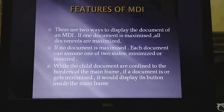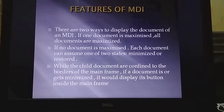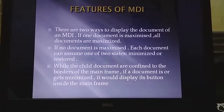The features of MDI: there are two different ways in which we can display the document in MDI. If one document is maximized, then the other document is also maximized. If no document is maximized, then the other document can assume either a minimized state or restored state. The child documents are confined to the borders of the main frame, meaning we cannot drag the child frame outside the main frame or the MDI container.